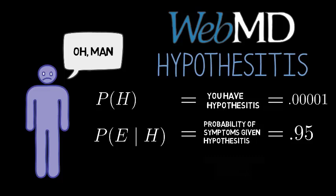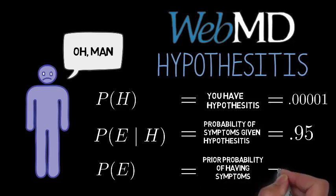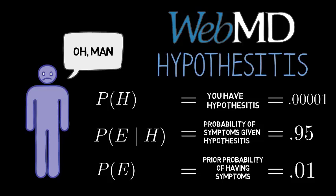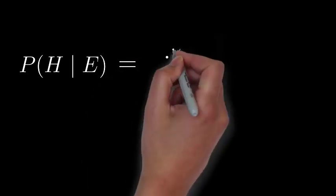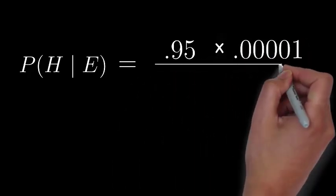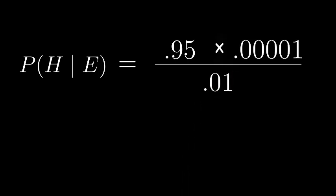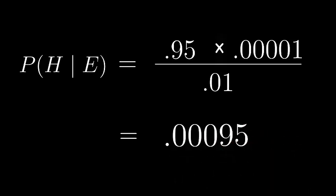With a little more Googling, you discover that the disease is extremely rare — only 1 in 100,000 people have it. So p of hypothesitis is .00001. Now for the last ingredient: what kind of symptoms are they? Suppose they're very common, like a headache and a runny nose. Lots of people have those. Google tells you 1 in 100. So p of symptoms, your prior probability that you would come down with the symptoms you have, is .01. At last, you know everything you need to know. Bayes' theorem tells you that p of hypothesitis given symptoms equals p of symptoms given hypothesitis times p of hypothesitis divided by p of symptoms. In other words, p of hypothesitis given symptoms equals .00095, or a little less than 1 in 1000.